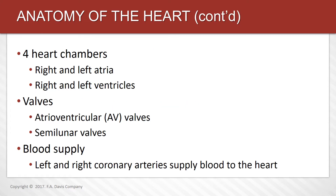The heart has four chambers: the right and left atrium, and the right and left ventricles. The right atrium receives deoxygenated blood from the systemic circulation through the great veins — the inferior and superior vena cava. The blood flows from the right atrium to the right ventricle when the tricuspid valve opens, and is then delivered to the pulmonary circuit through the pulmonary artery.